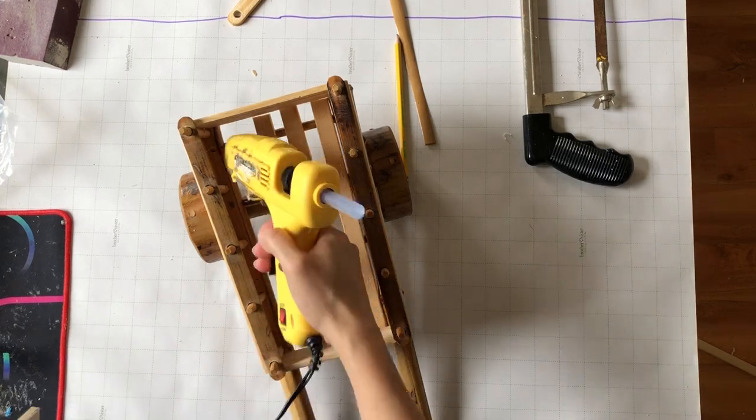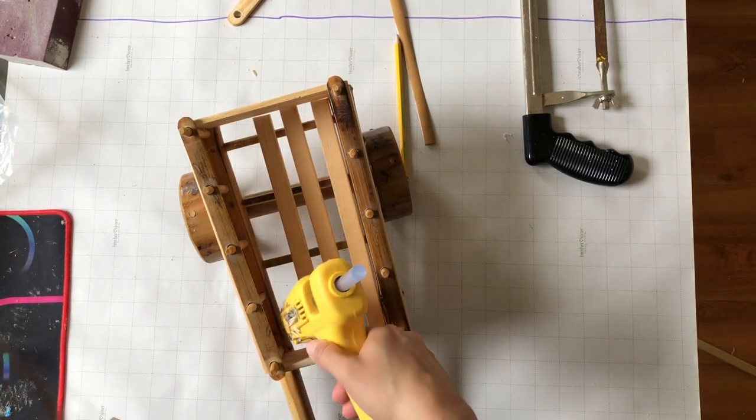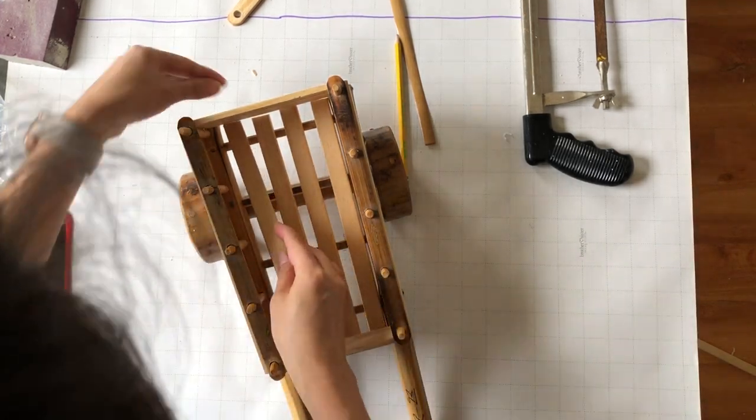For the bottom of the wheelbarrow, I decided to only do four sticks. So I'm just going to glue them the exact same way.